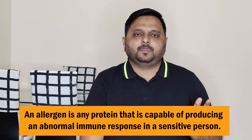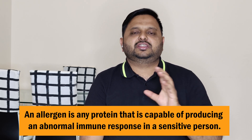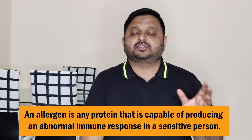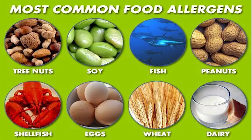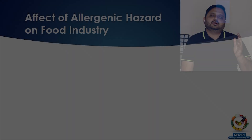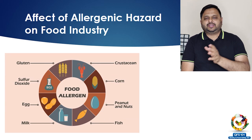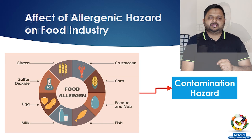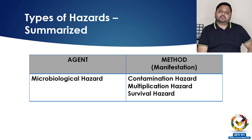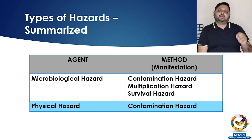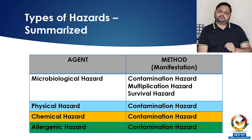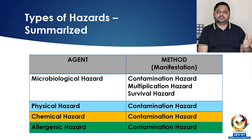The last hazard is the allergenic hazard. There is a group of ingredients that cause allergic reactions — some people are allergic to gluten in flour, some to nuts, and some to fish or shellfish. If a consumer accidentally consumes these foods, there will be an allergic reaction in their body. Allergenic hazards affect food through contamination. To summarize: microorganisms can cause contamination, multiplication, and survival, while physical, chemical, and allergenic hazards affect food only through contamination — which is why microorganisms are one of the biggest problems in the food industry.